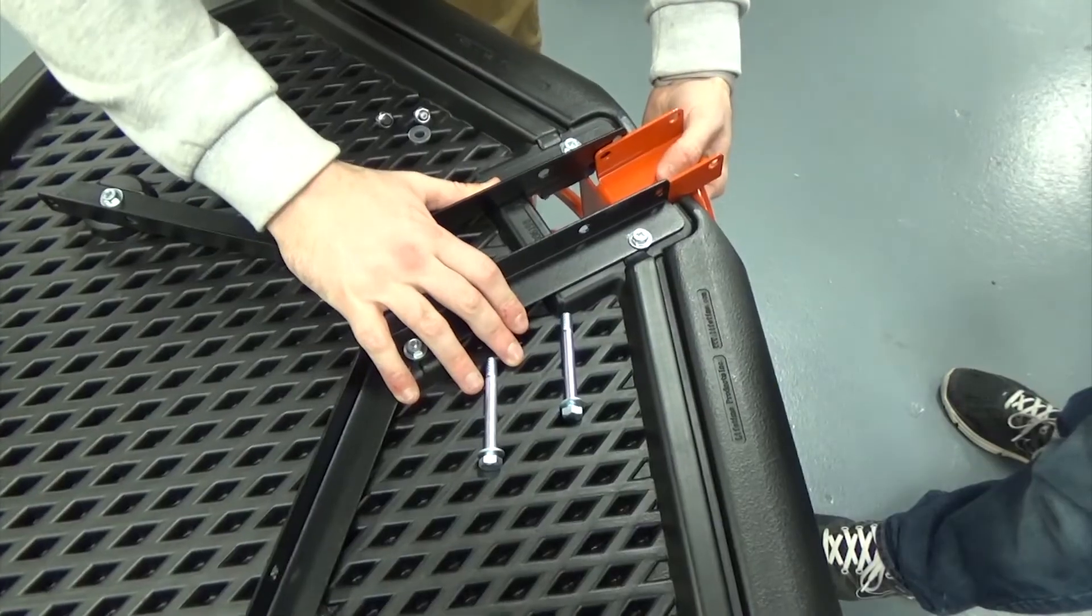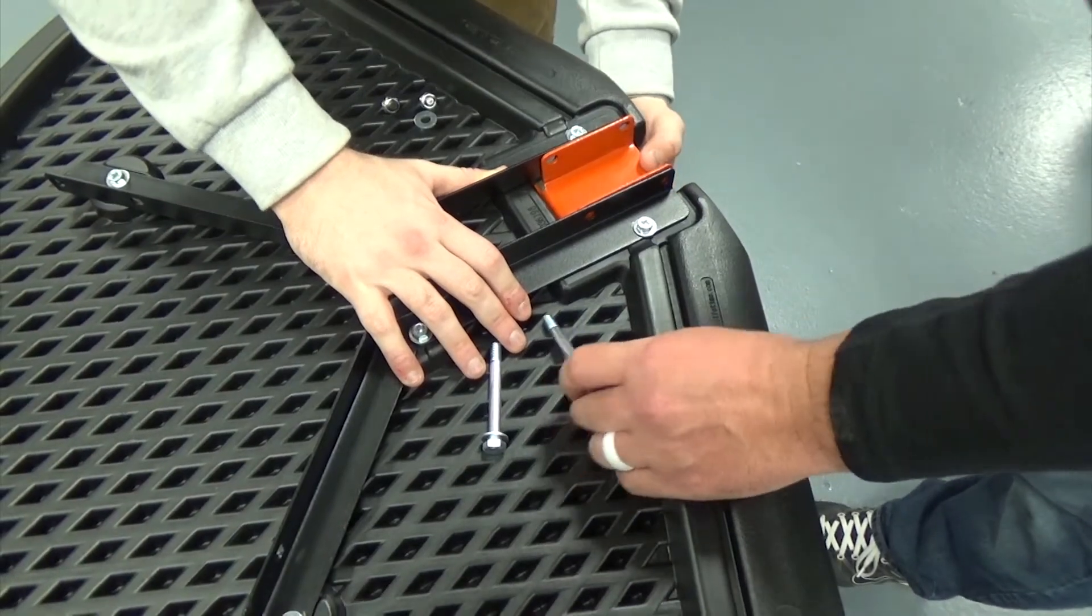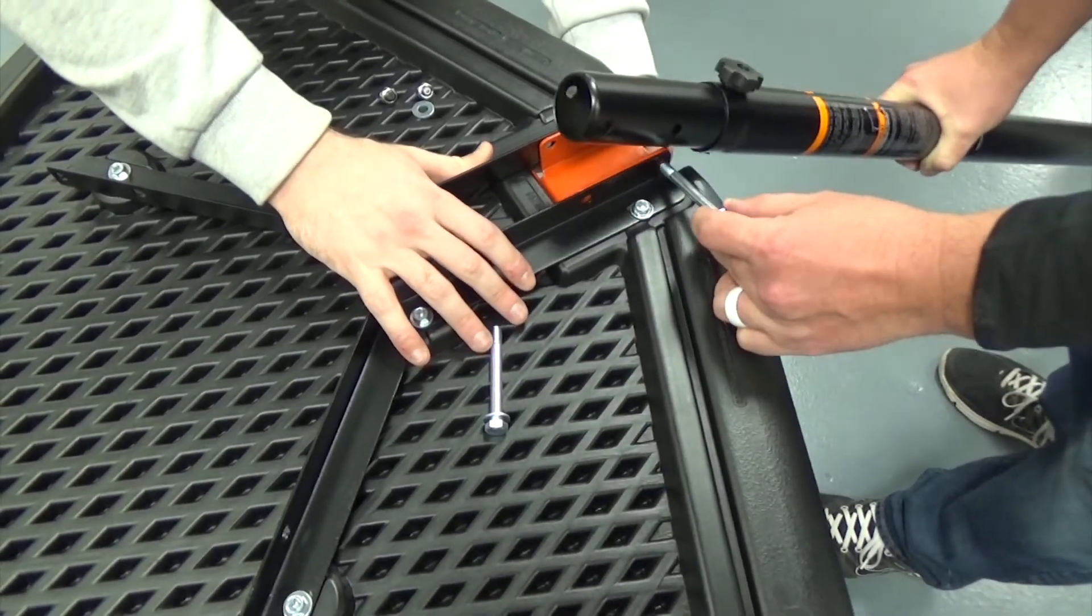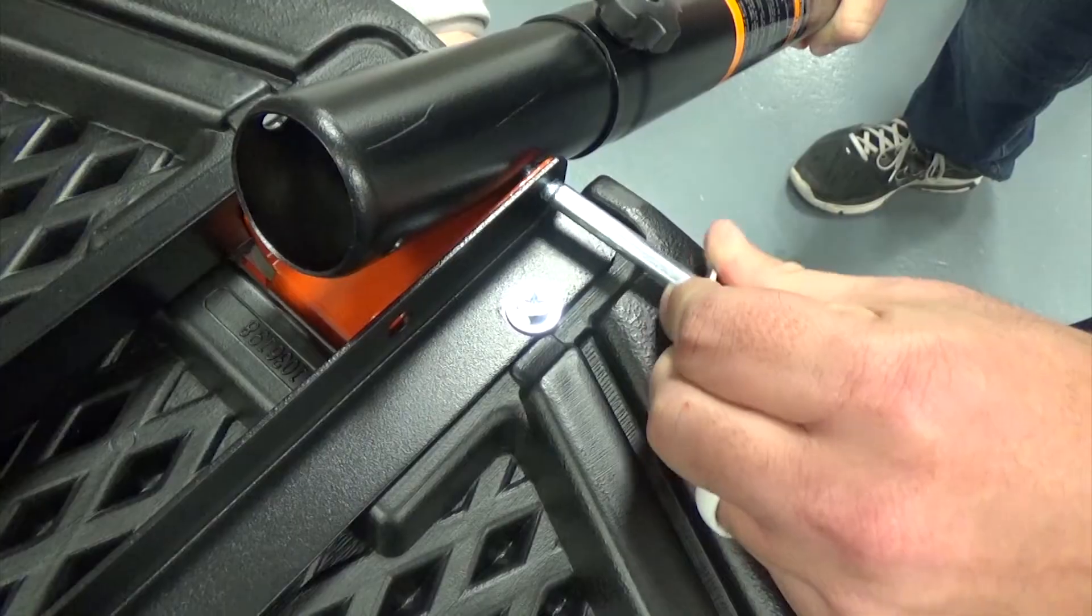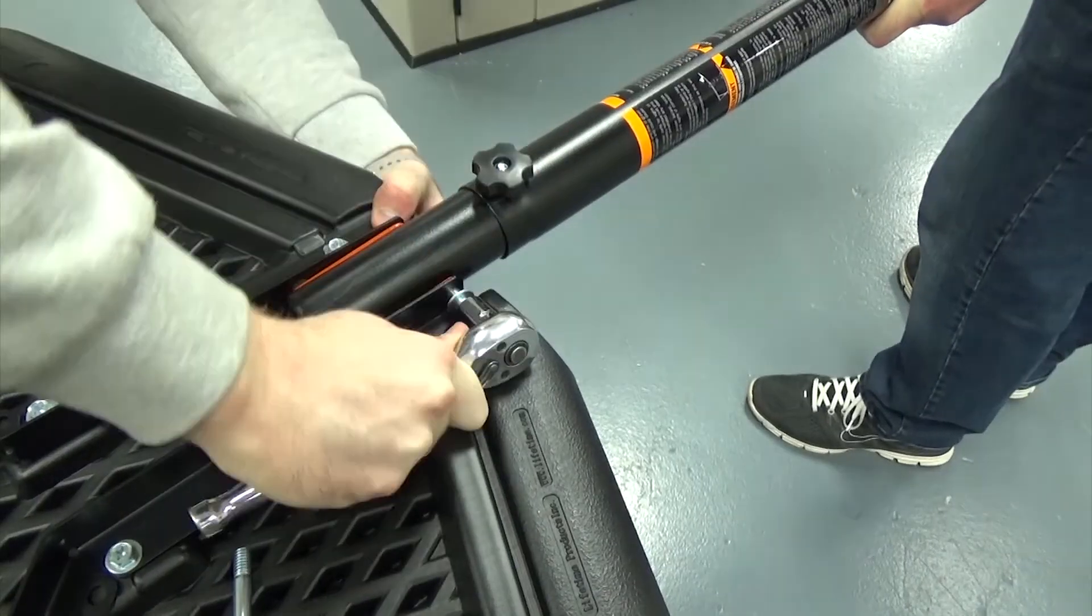Slide the rim into place on the backboard, then line up the holes in the top pole with the holes on the backboard brackets and the rim. Secure the backboard, rim, and pole together using the hardware provided.